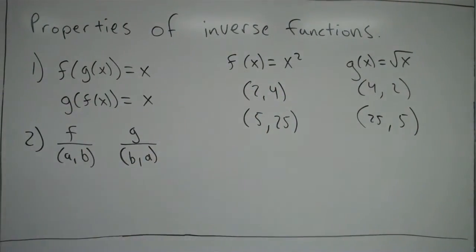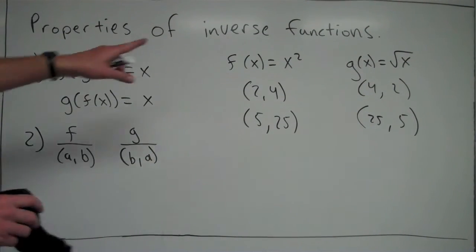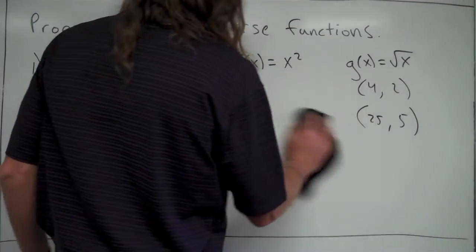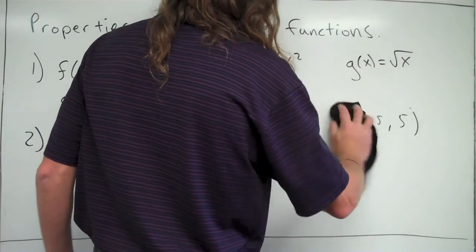And if you did that with any point, again you have to only go from 0 to infinity since square root of x doesn't allow any negative x values in there. But these set of functions meet this criteria as well. So definitely looks like f and g here are inverse functions of one another.